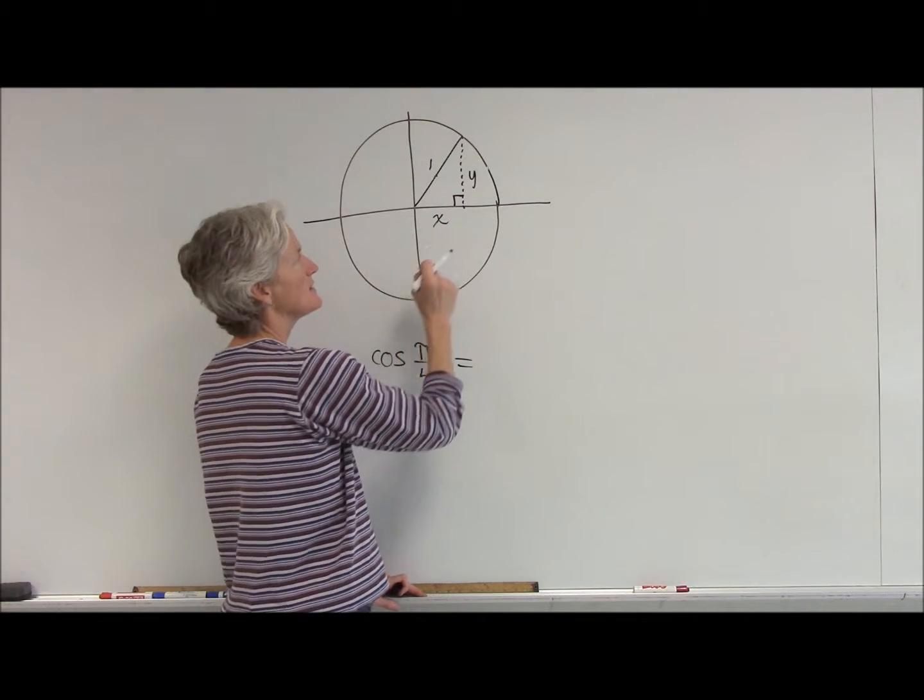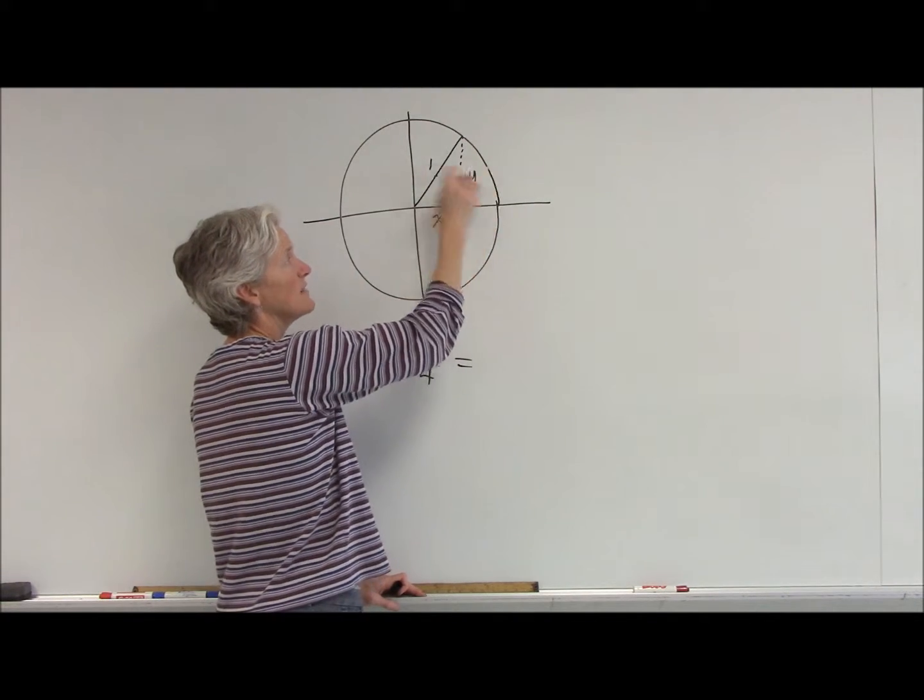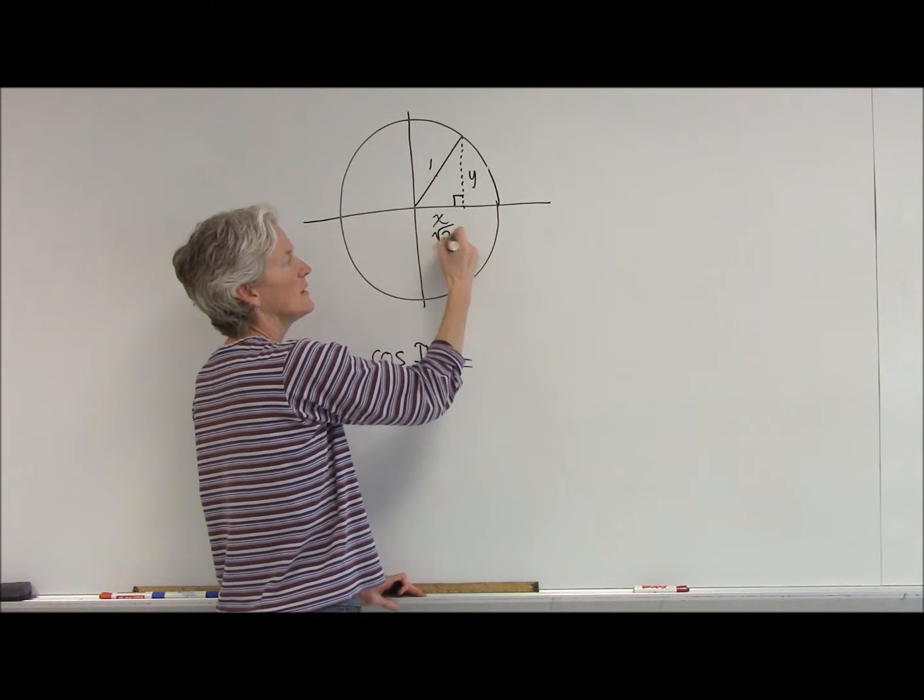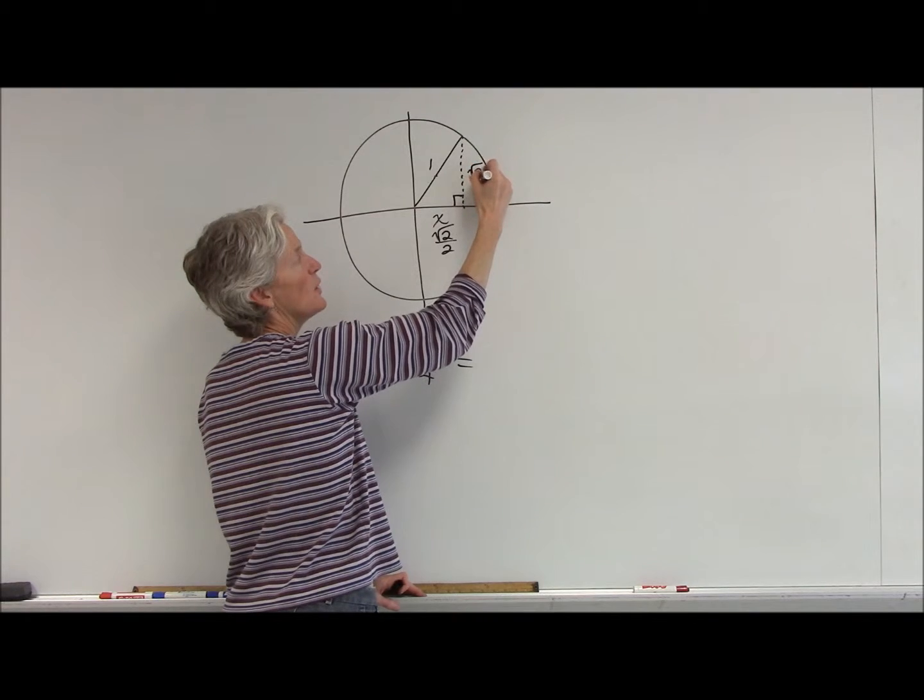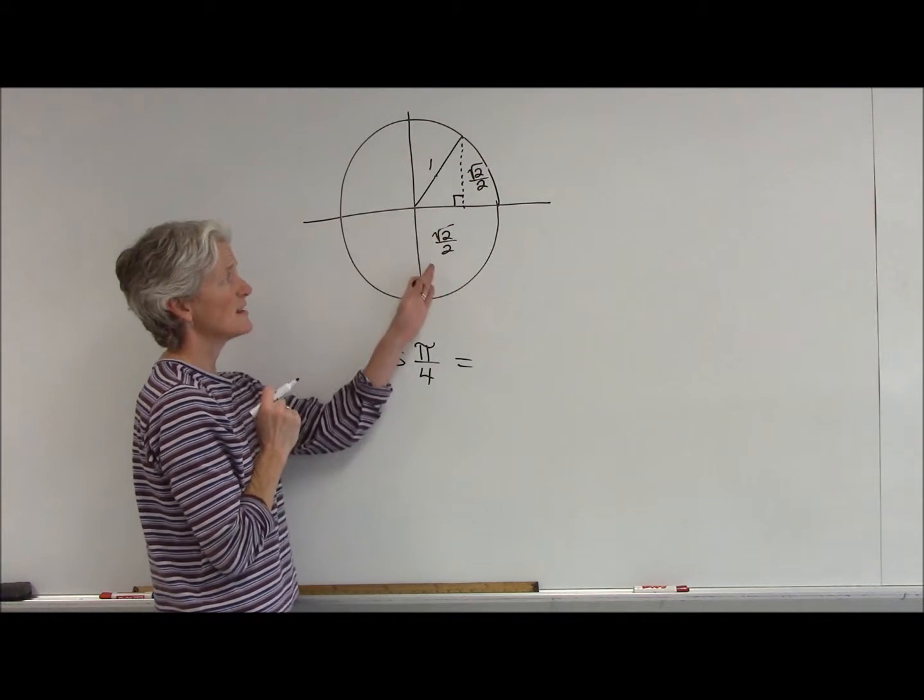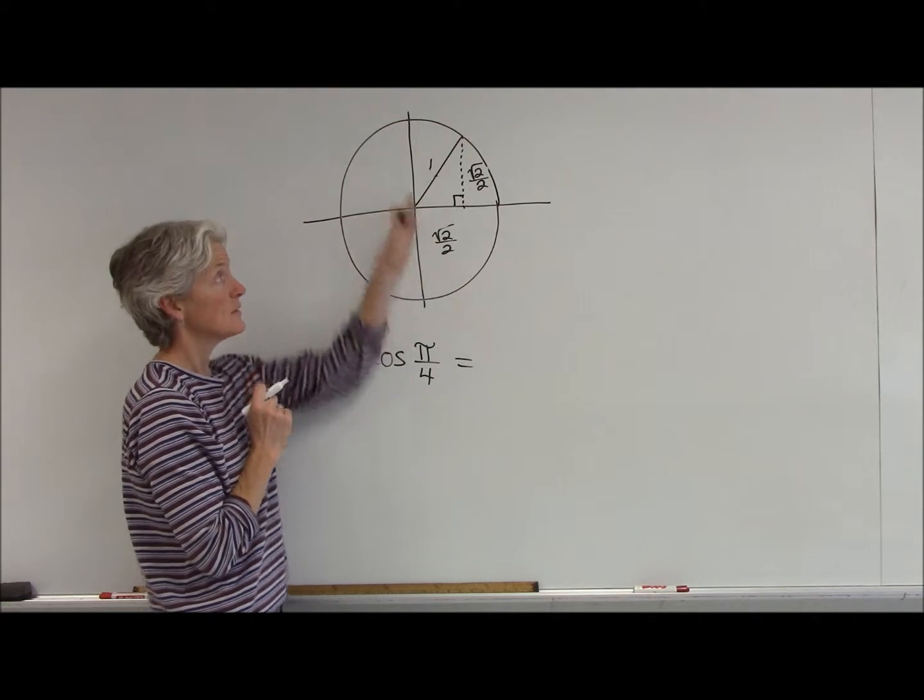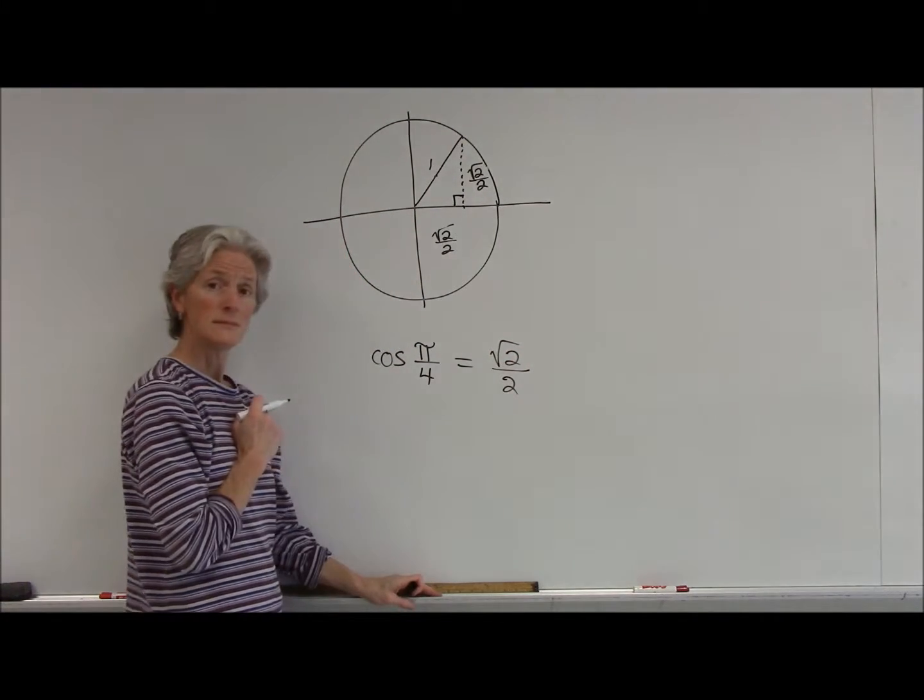I know that there's a certain relationship between my sides and the hypotenuse, and this is something that we just have to either know or memorize. So, my cosine is going to be the adjacent, or the x, over my hypotenuse, square root of 2 over 2.